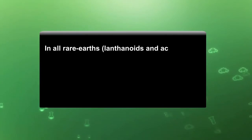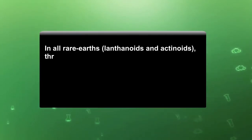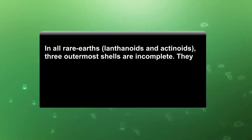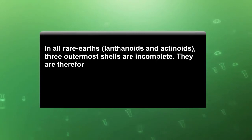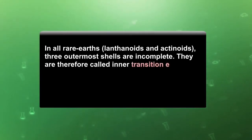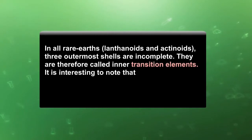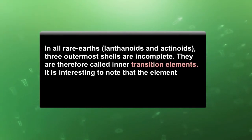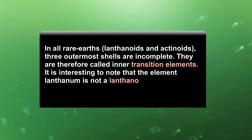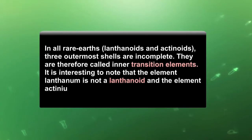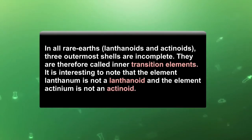In all rare earth elements — lanthanoids and actinoids — three outermost shells are incomplete. They are therefore called inner transition elements. It is interesting to note that the element lanthanum is not a lanthanoid, and the element actinium is not an actinoid.